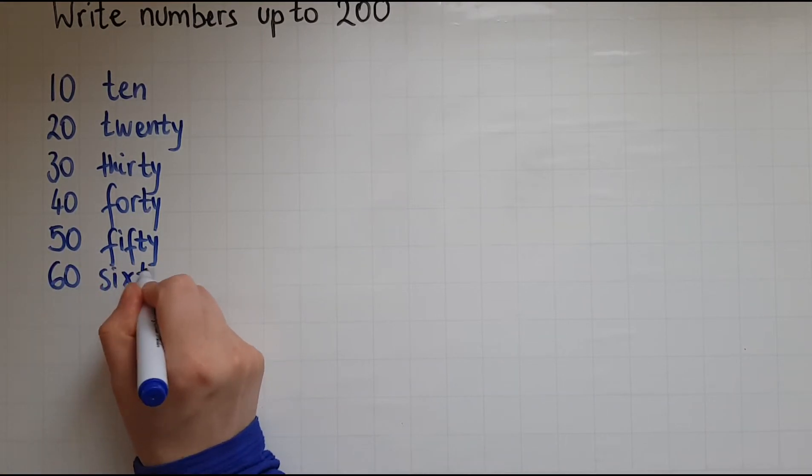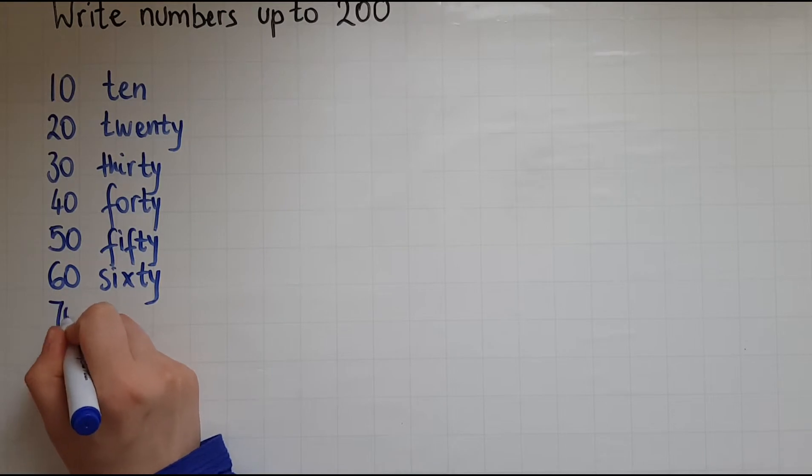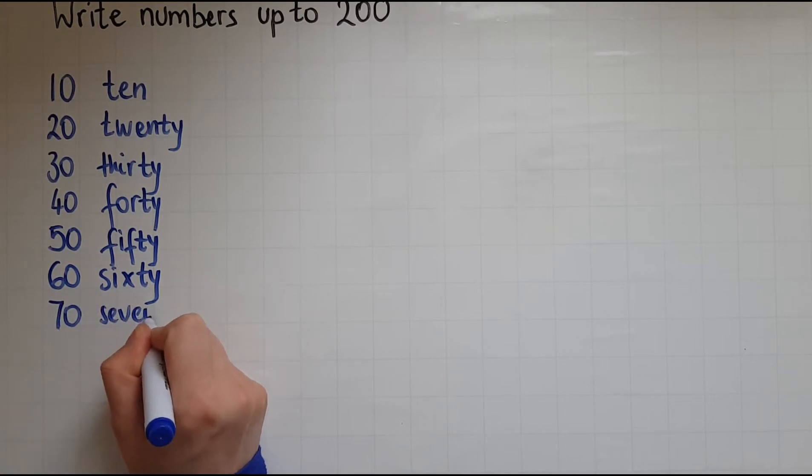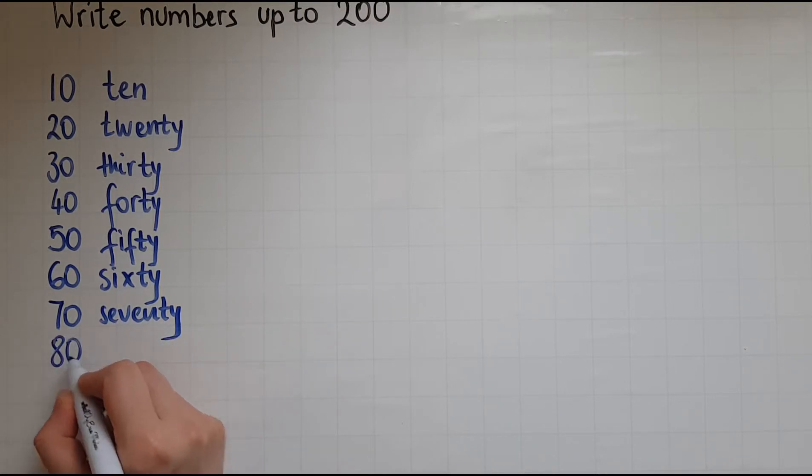60, that doesn't change. 70, doesn't change either from the 7, just add the ty at the end. 80, 90.